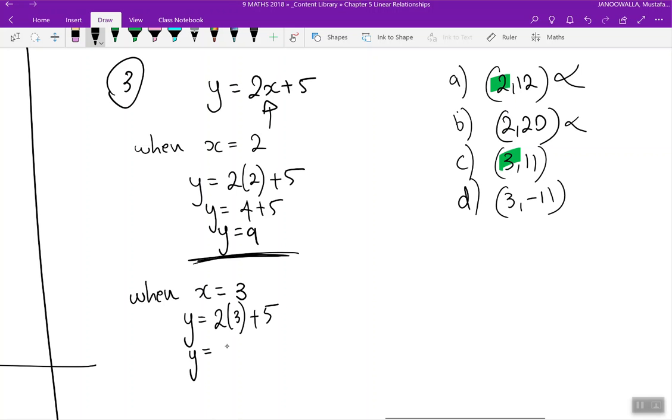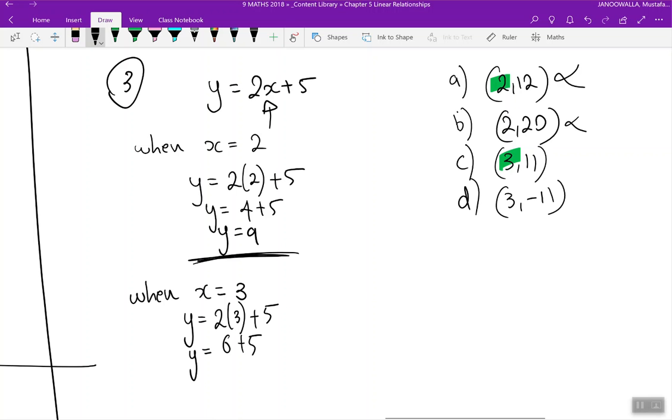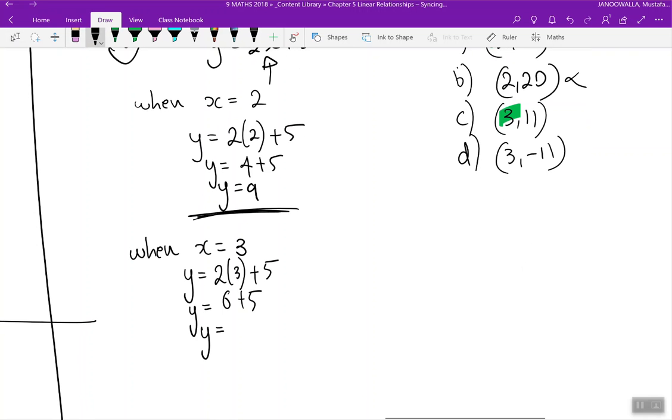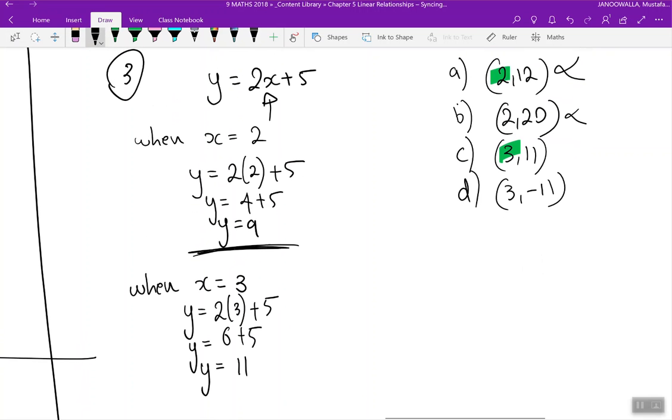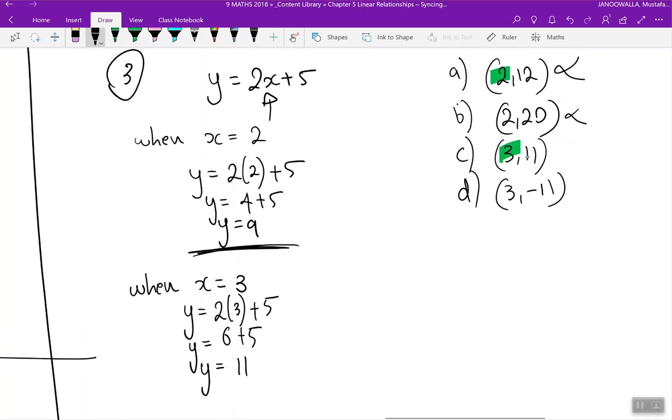3 times 2 is 6 plus 5. Good work, now tell me which point does this pass through? It's (3,11). Absolutely it does. It doesn't pass through (3,-11), so that's wrong. Our correct answer is C.